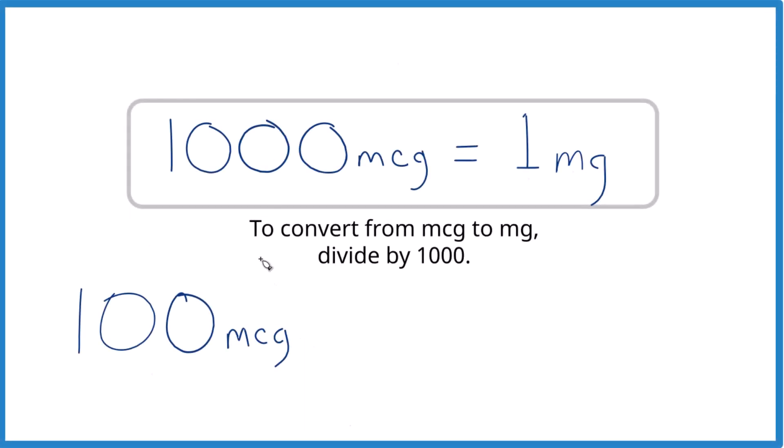In this video, we're going to convert 100 mcg to mg, so 100 micrograms to milligrams. To do that, we need to know there are 1,000 micrograms in one milligram. When we go from micrograms to milligrams, we just divide by 1,000.